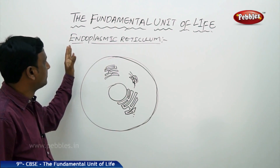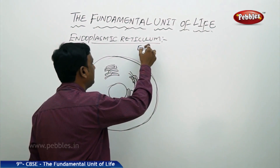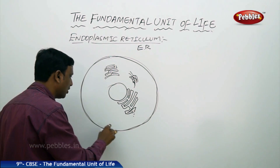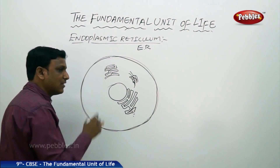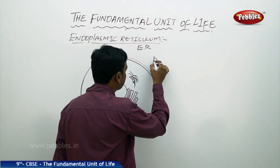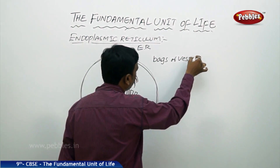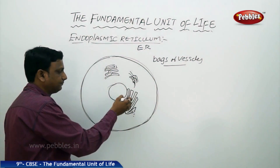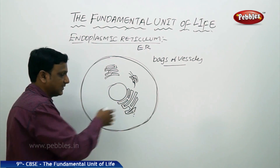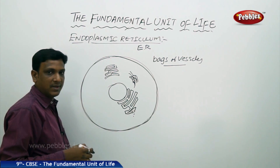Let us talk about the endoplasmic reticulum, in simple terms called as ER. If you see a eukaryotic cell, you will find the endoplasmic reticulum in the form of elongated, oval or oblong bags or vesicles. They have some channels — they look like a network of channels extending from the nucleus towards the plasma membrane.